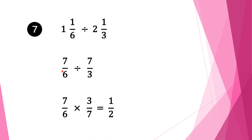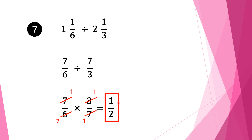Now we have a normal fraction division. We bring the first fraction 7 over 6 as it is, change the division sign into multiplication, and take the reciprocal of the second fraction. It is 7 over 3, so we write it down as 3 over 7. We check whether we can cancel anything — we can cancel 7 and 7, and also 3 and 6. So 7 goes into 7 once, 3 goes into 3 once, and 6 goes into 3 two times. So our final solution is 1 half.